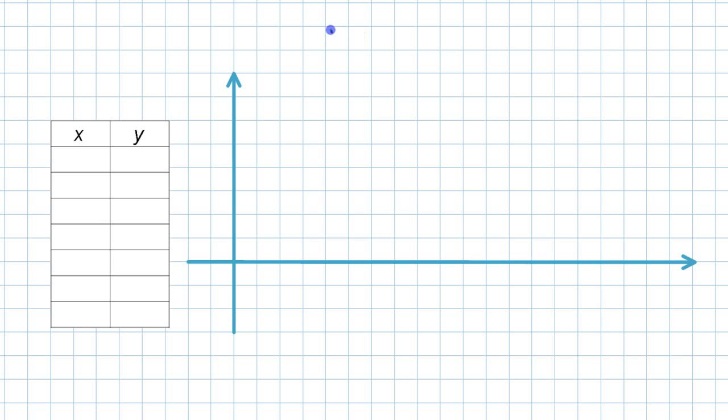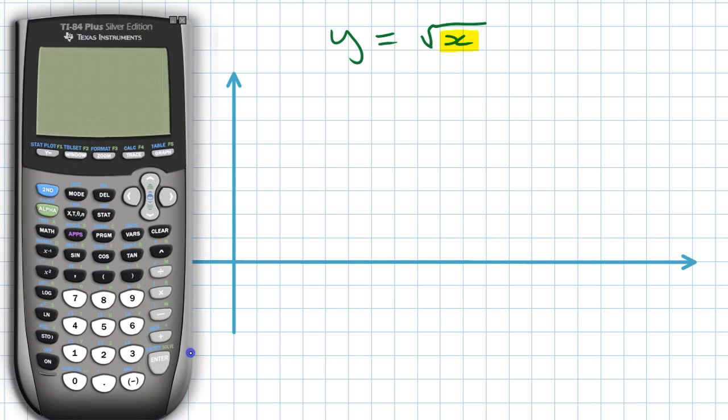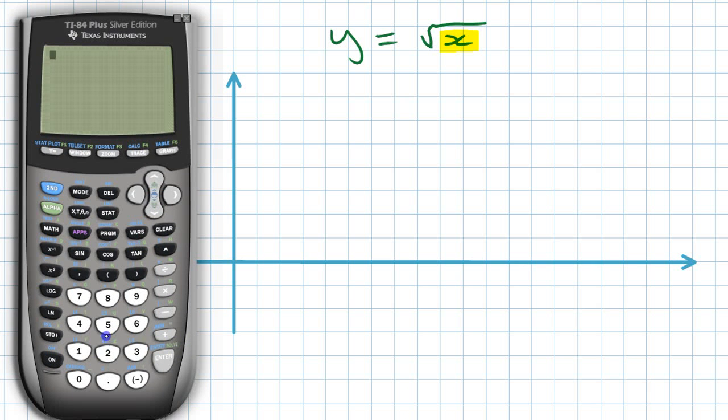We're going to start by thinking about y equals square root of x. Now, normally when we start to graph a function, it's important to think about what kind of values make sense to pick for x there. For a lot of the functions you've looked at in your mathematical career so far, you can pick anything you want for that variable x. But in this case, there's going to be certain things that we aren't going to be able to pick.